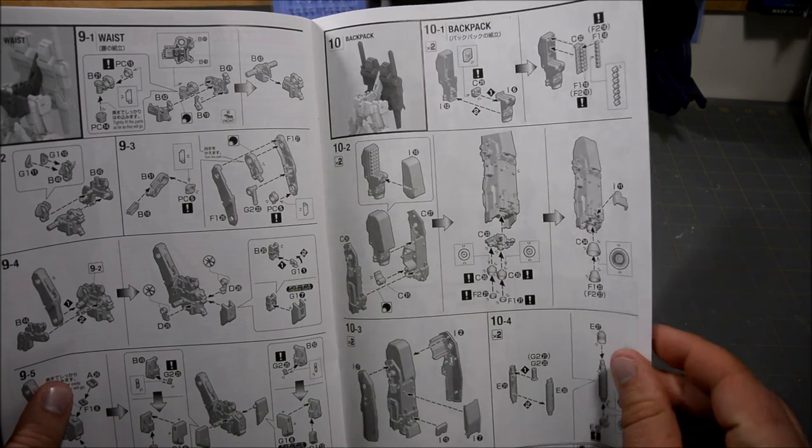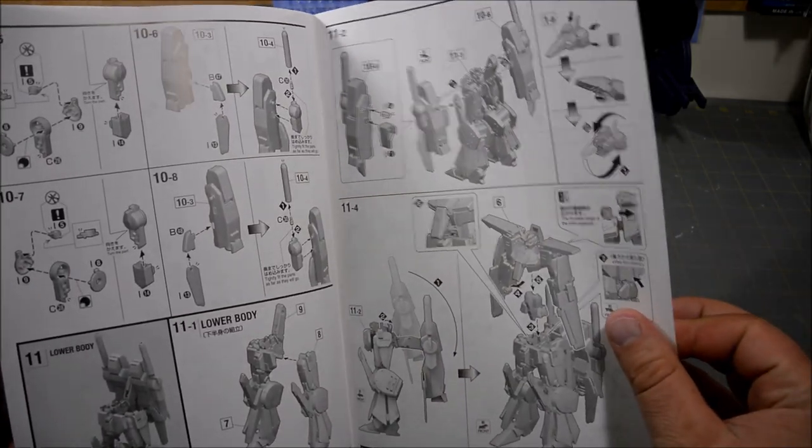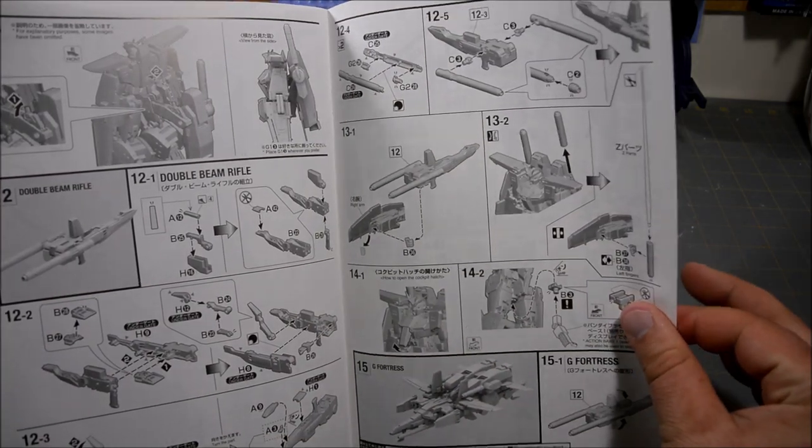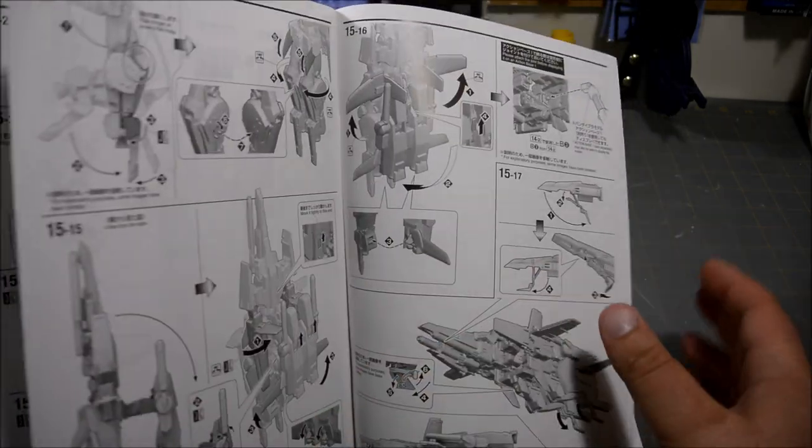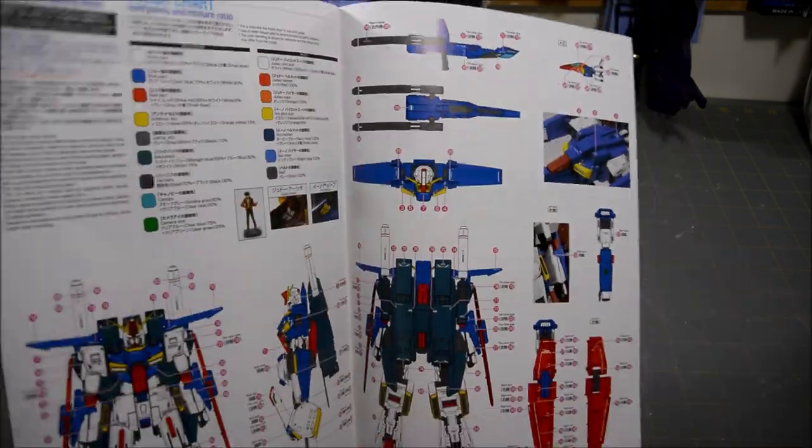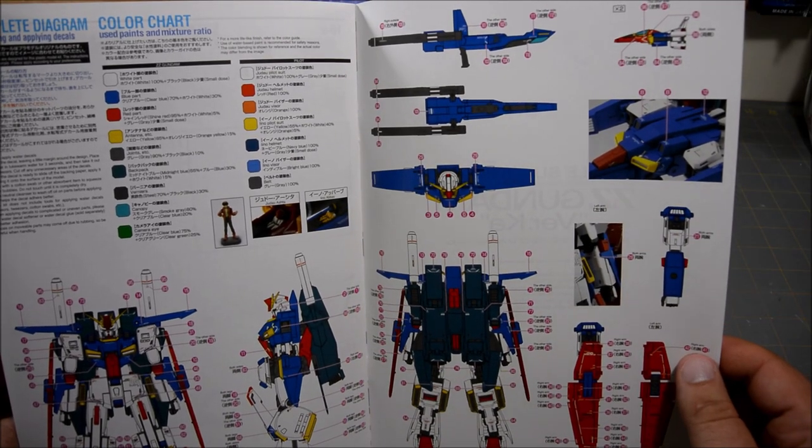More legs, the legs are really complex on this kit. Got the little interview in the middle, and then this is the backpack. And then looks like we're moving on to the weapons first, then transformation. Yeah, so weapons transformation takes up looks like four or five pages.